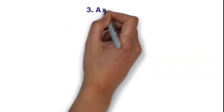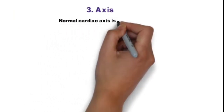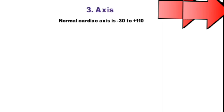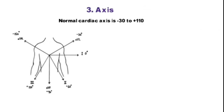Third step is to calculate axis. First of all, normal cardiac axis is from minus 30 to plus 110 degrees. Perpendicular leads are used most commonly to calculate the axis - that are lead 1 and AVF.